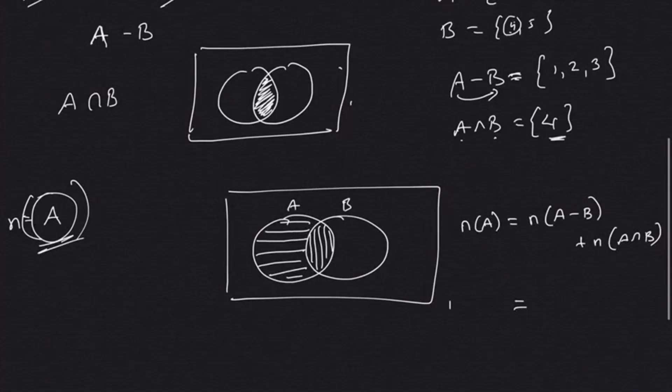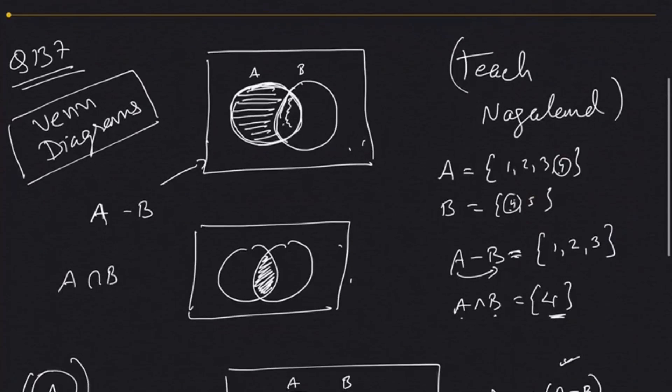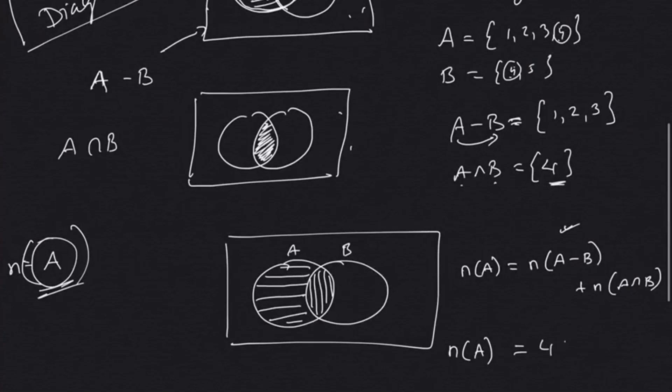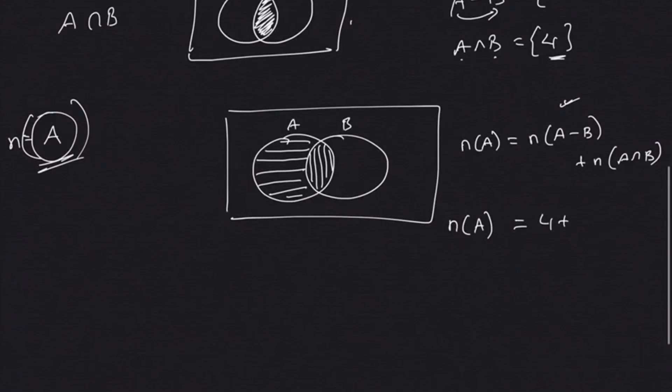Number of elements in set A equals number of elements in set A minus B, which is 4 elements, plus number of elements in A intersection B, which is 3 elements. 4 plus 3, so answer is 7. That means number of elements in set A is equal to 7.